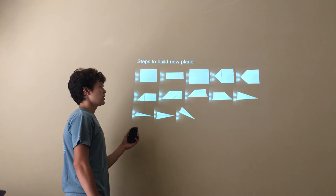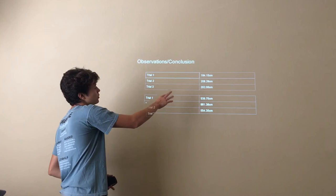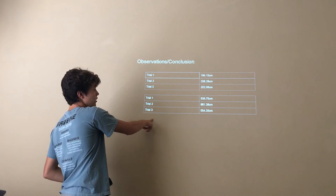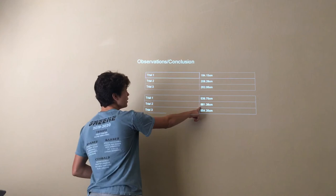So these are the results I got from the first plane. I got 184 centimeters—it averaged out to about 203. And then for the second plane, the average was 648, something around there. So it increased greatly. As you can see, one of these trials even went to 881 centimeters.